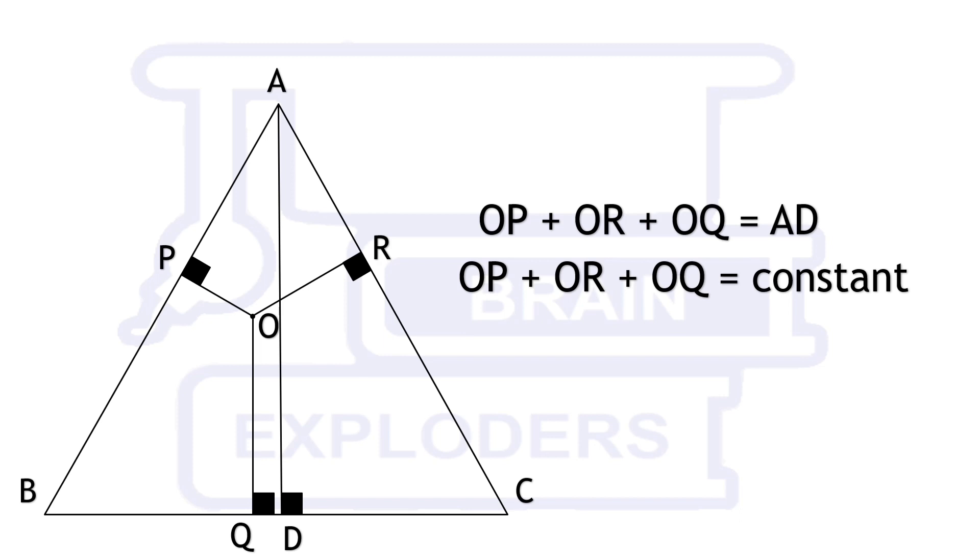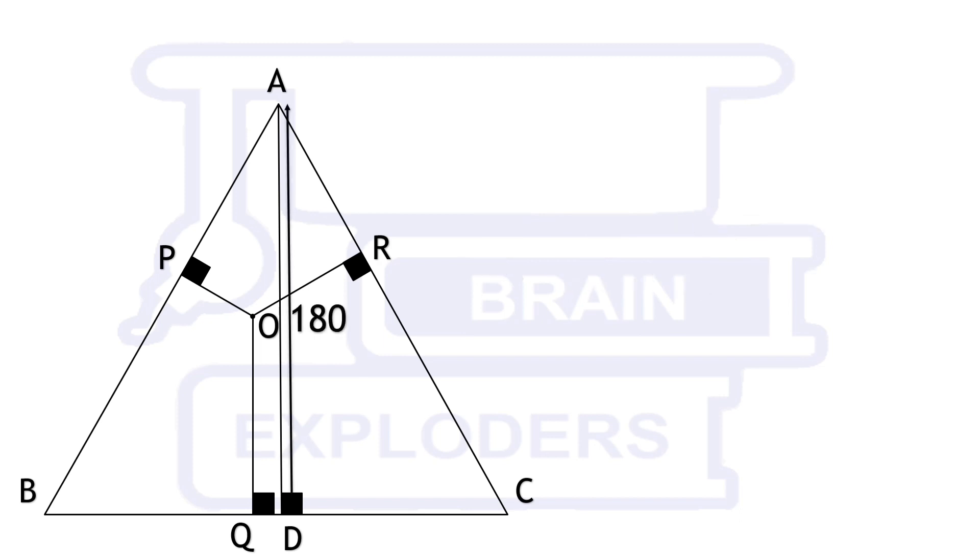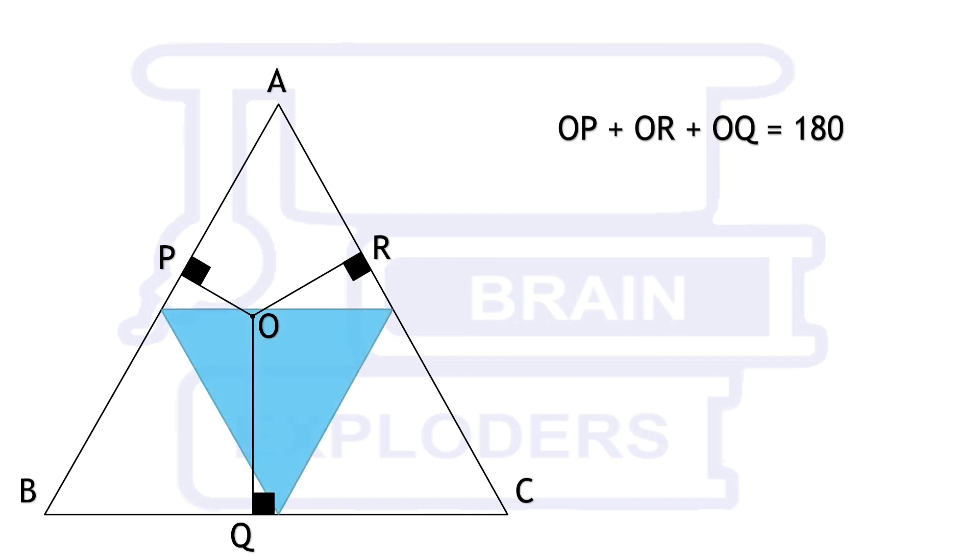Suppose AD is equal to 180 and OP, OQ, and OR are those three numbers whose sum is equal to 180. Now join the midpoints of AB, BC, and CA to form this blue triangle. All the four smaller triangles formed here are congruent to each other.